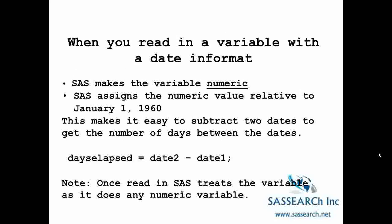SAS also has some functions for manipulating dates. When you read in a variable with a date informat, SAS makes the variable numeric. So to SAS, the date is a number, and that number is the numeric value relative to January 1, 1960. Since SAS turns it into a number, it is easy to subtract two dates to get the number of days between them.